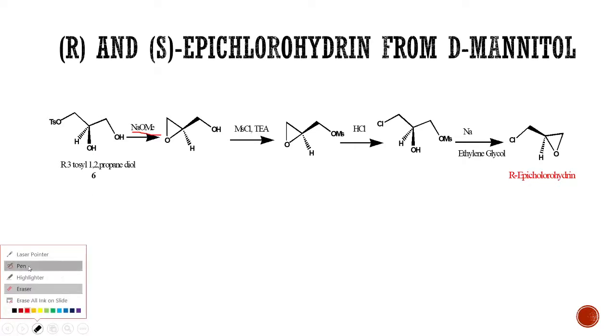This secondary OH will lose its proton to the base and it will attack over here, and tosyl will be a good leaving group. So we get this compound which is again an epoxide with a primary alcohol.